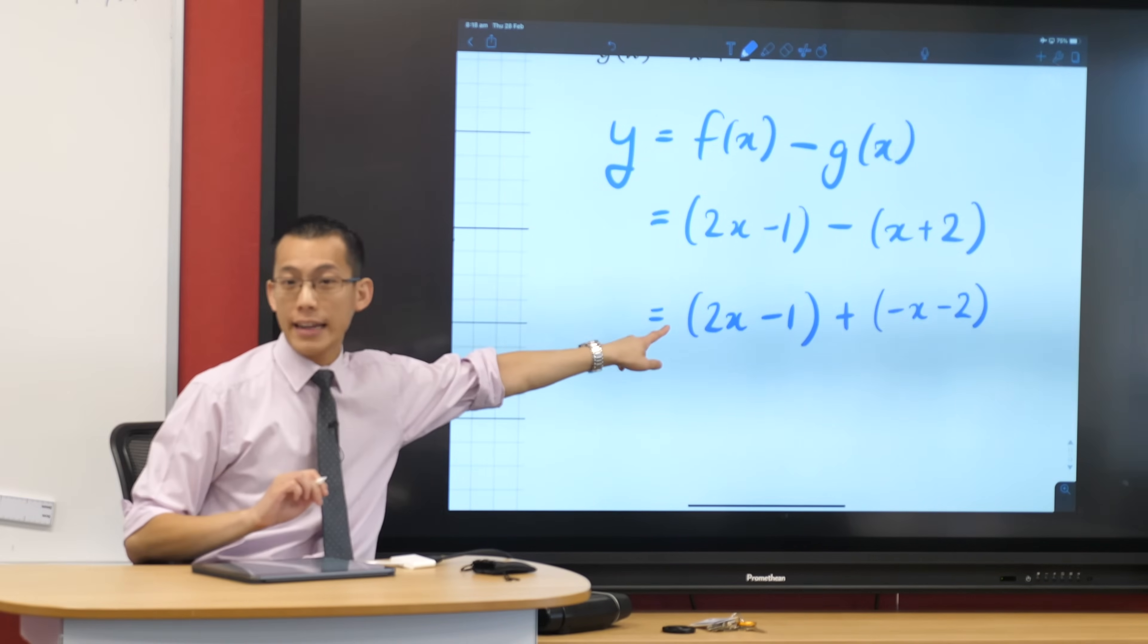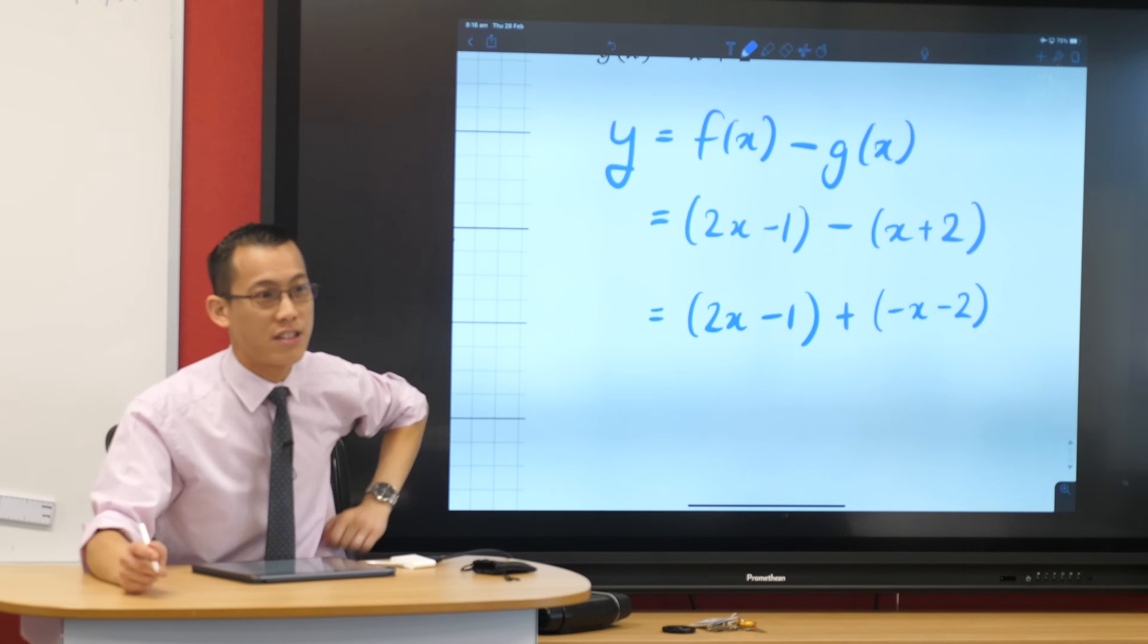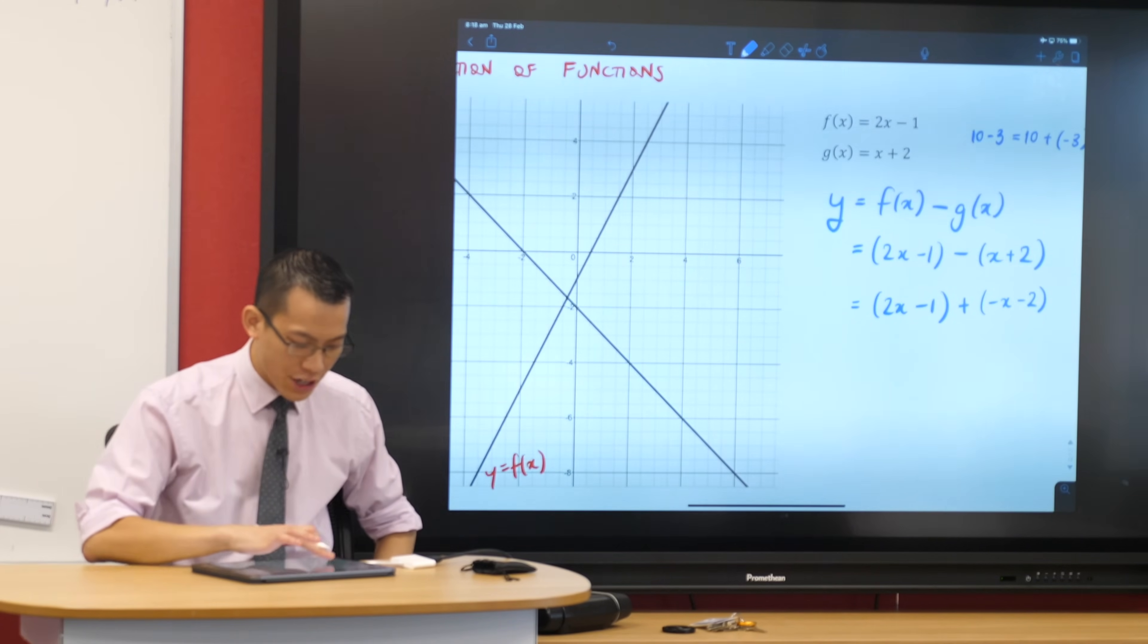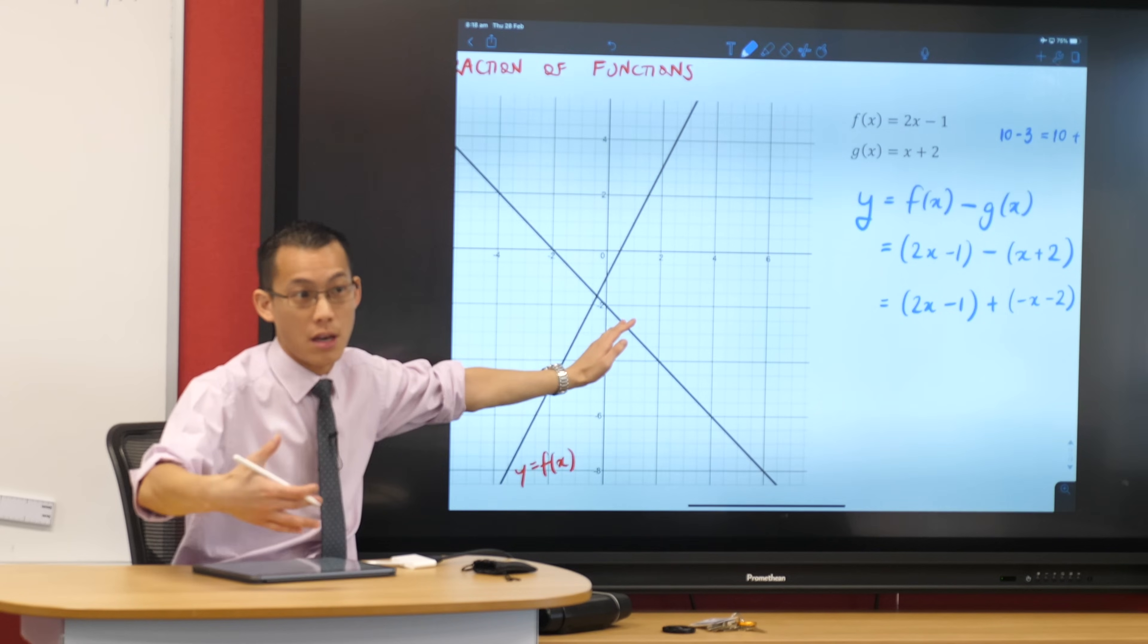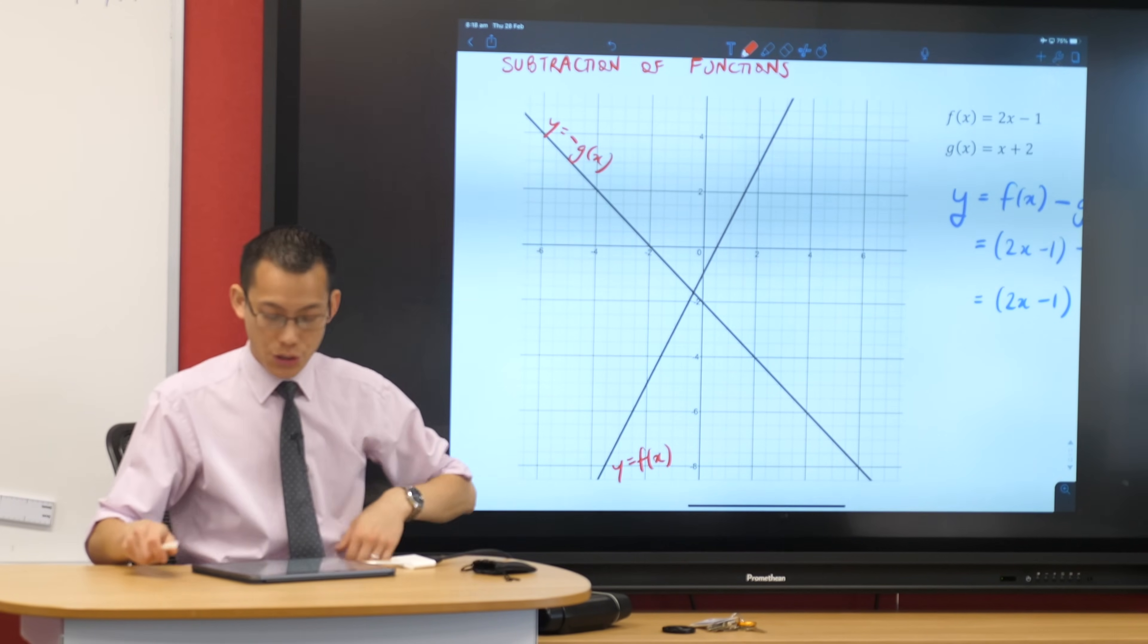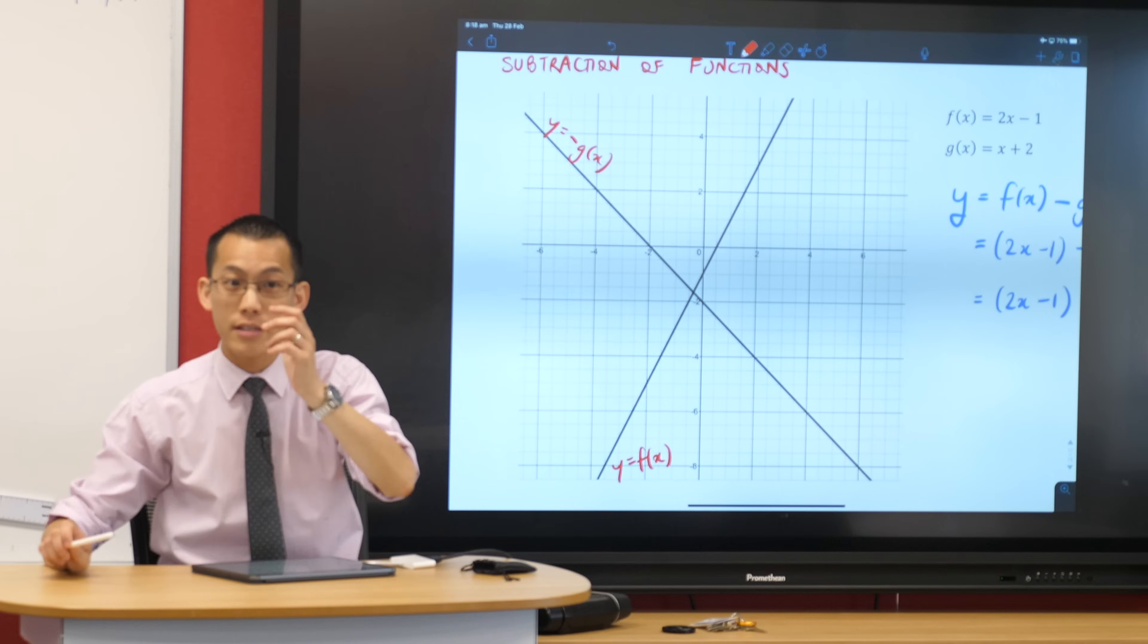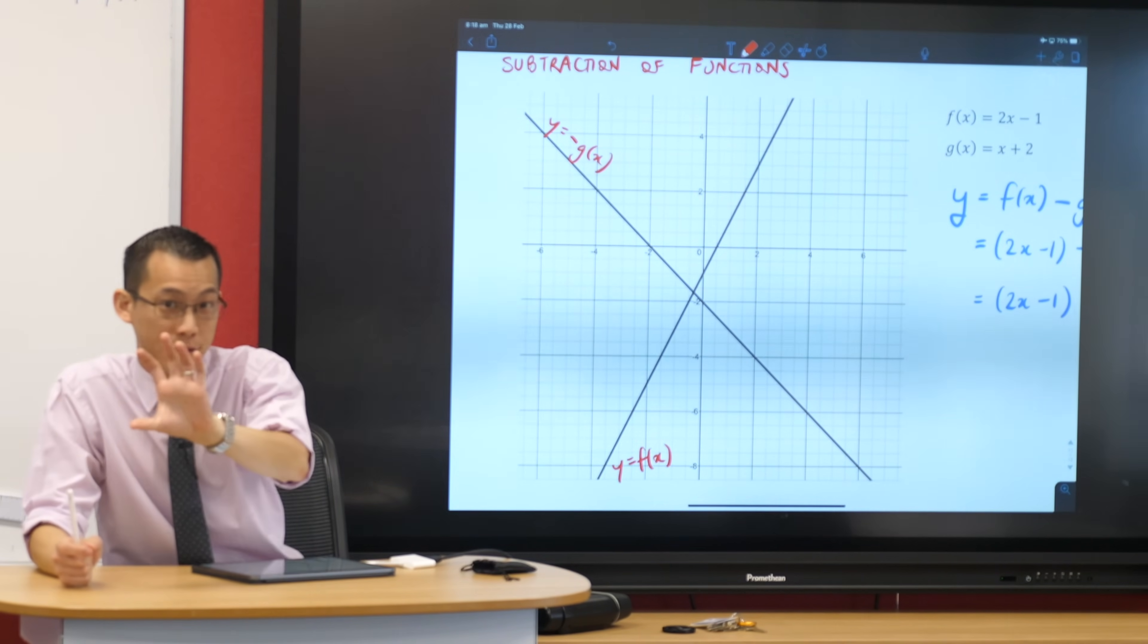Now, the reason why I like this way of writing it is because it's addition of functions. We already know how to do this. Does that make sense? So now you can see over here, the graph I've actually given you, this sloping one, this is actually minus x minus 2. So this graph here is not g of x. It's actually minus g of x. Do you agree with that? So the real g of x is actually that one, but upside down. That's exactly what I've done. You with me?